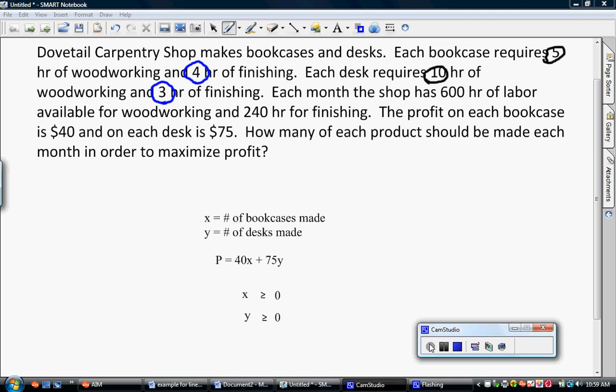We only have 600 hours available for woodworking and 240 hours available for finishing. So if we go back and we look at this equation, this equation represents all of our woodworking with the bookcases and the desk. This equation represents all of our finishing with the bookcases and the desk. Sometimes it helps to take a pencil and underline everything involving each variable separately.